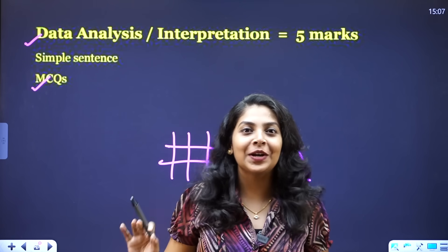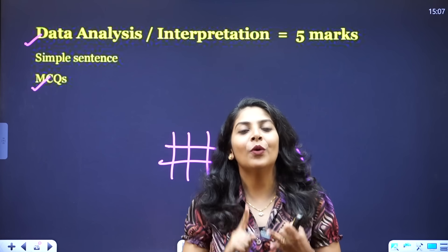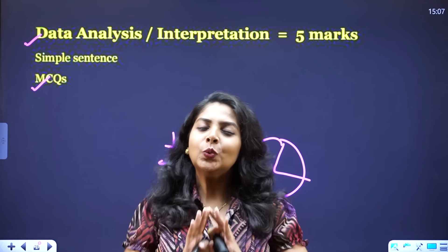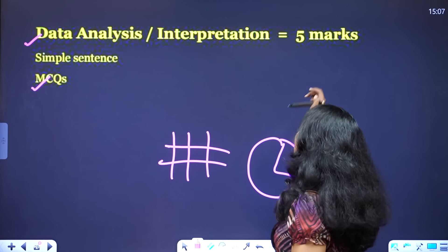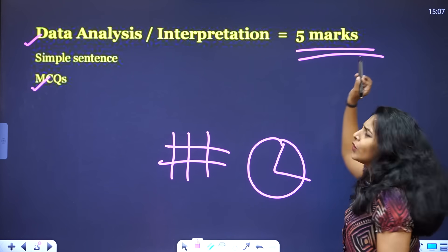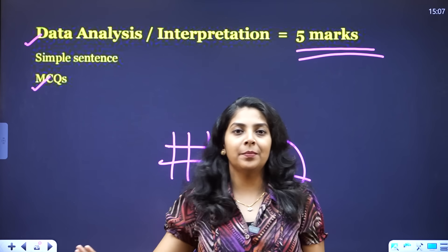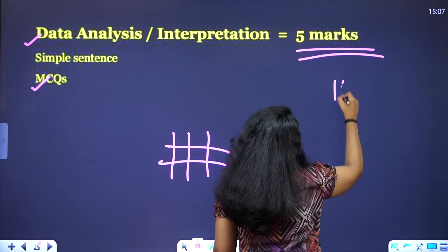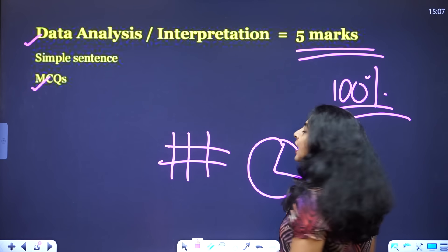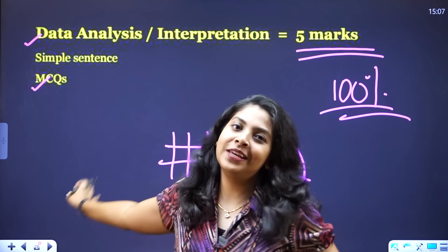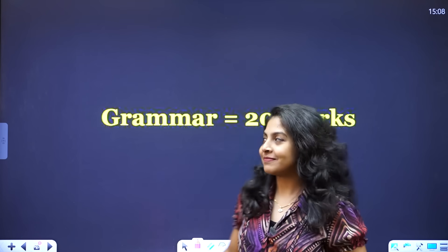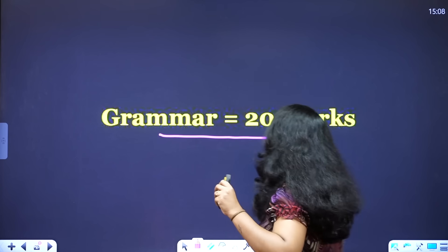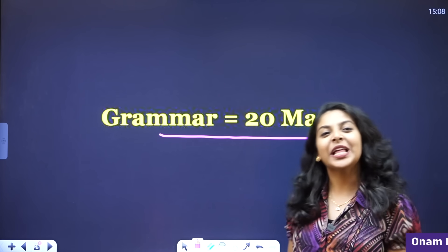If you have passage comprehension, poem comprehension, or data interpretation with multiple choice questions, you will have a number of questions. If you have 5 marks, you will have an easy score. If you have 5 marks, you will have a 100% question. You will have a 1–2 mark.